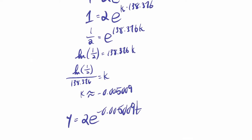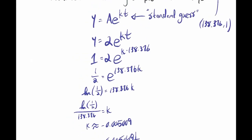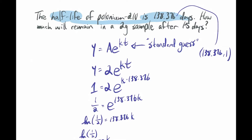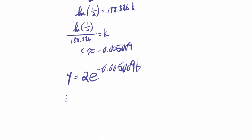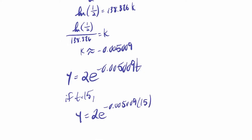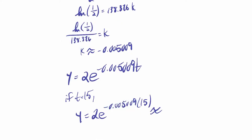To find the remaining amount after 15 days, plug in t = 15: y = 2·e^(-0.005009 × 15). Using the calculator with the more precise value, we get approximately 1.855 grams remaining in the sample.